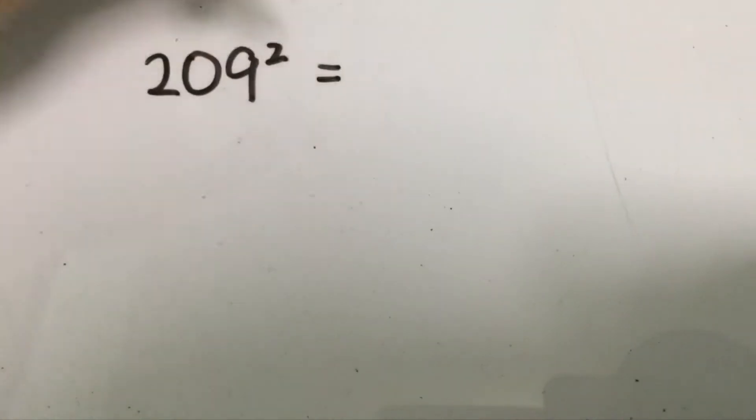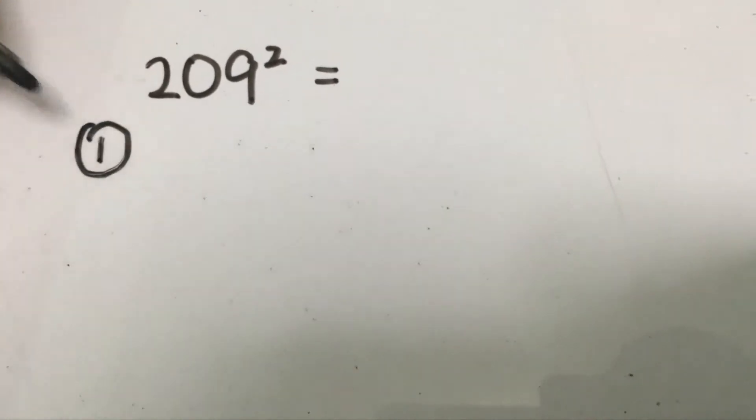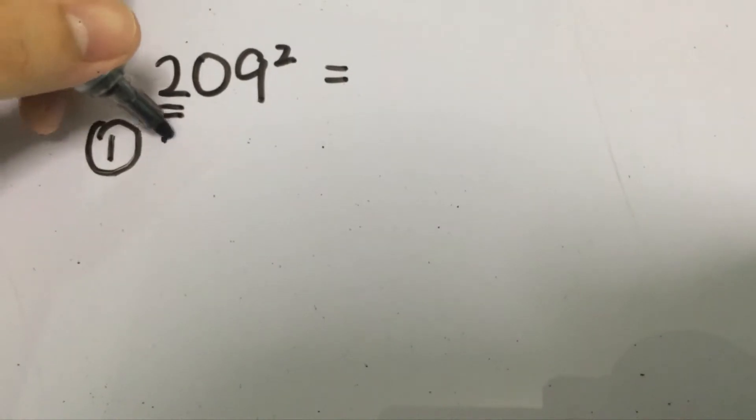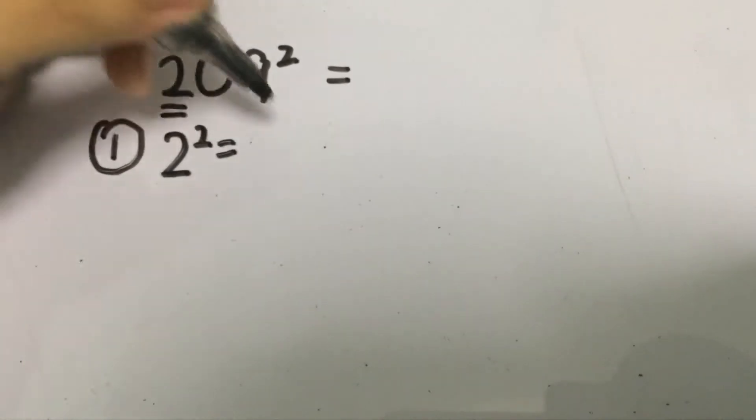Alright so here's the example of how to actually solve the problem. How do we solve this 209 squared? Well the first thing that you will do to solve this problem, there are three steps. The first step is to take the first digit itself which is in this case 2 and we square it and that will give you 4. So that will be the first value that we have gotten.